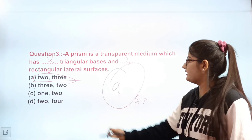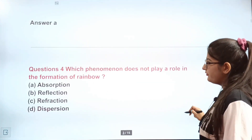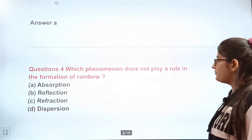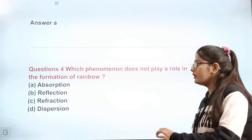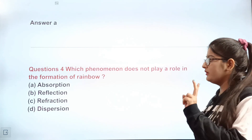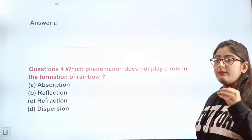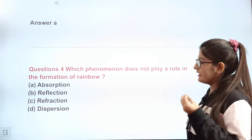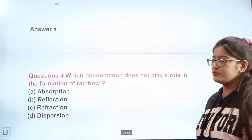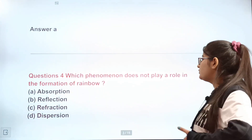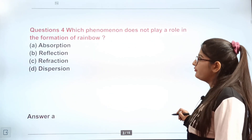Question 4: Which phenomenon does not play an important role in the formation of a rainbow? Options are: A absorption, B reflection, C refraction, D dispersion. The correct answer is A — absorption does not play an important role in the formation of a rainbow.